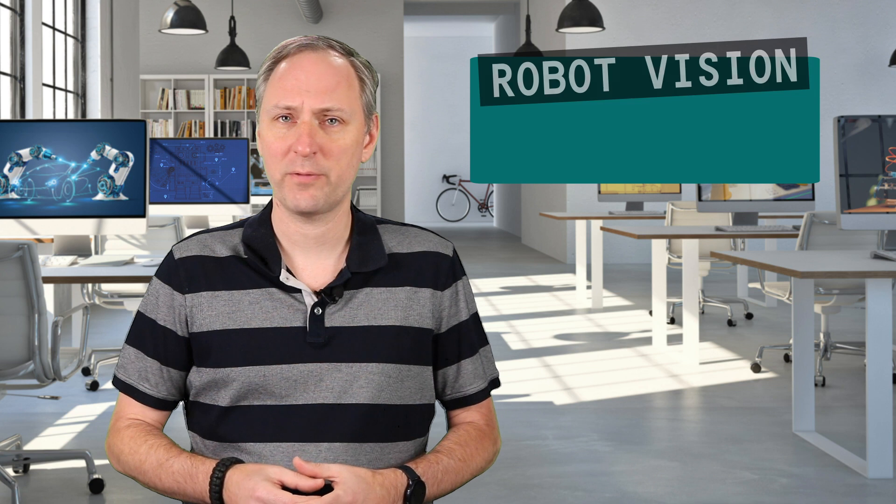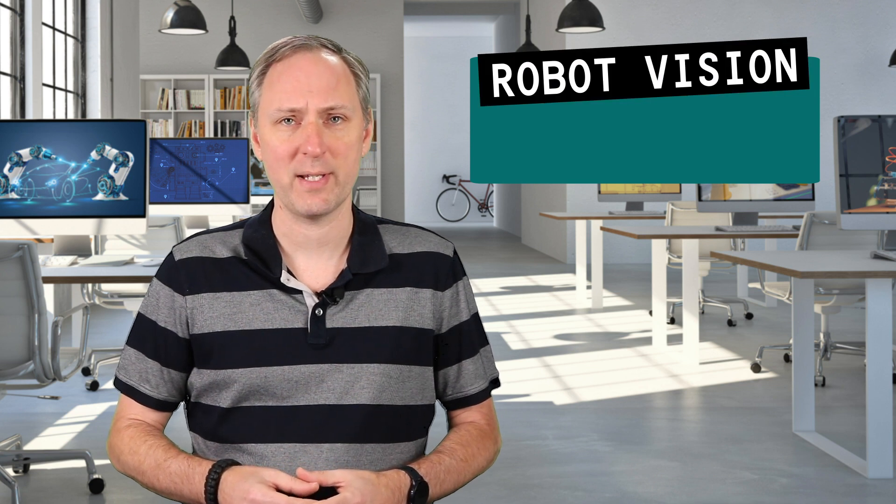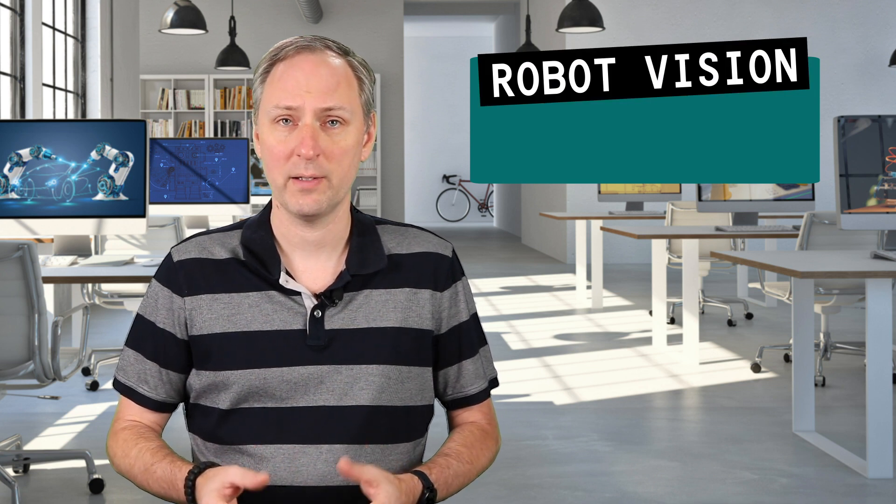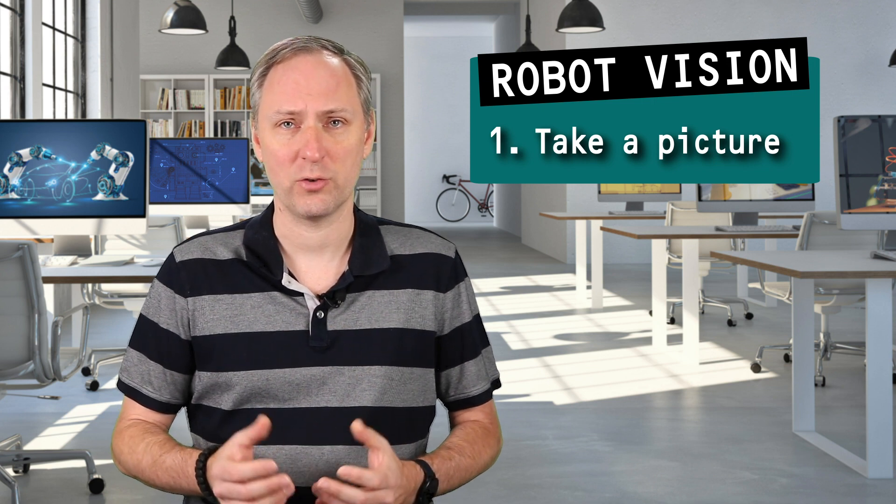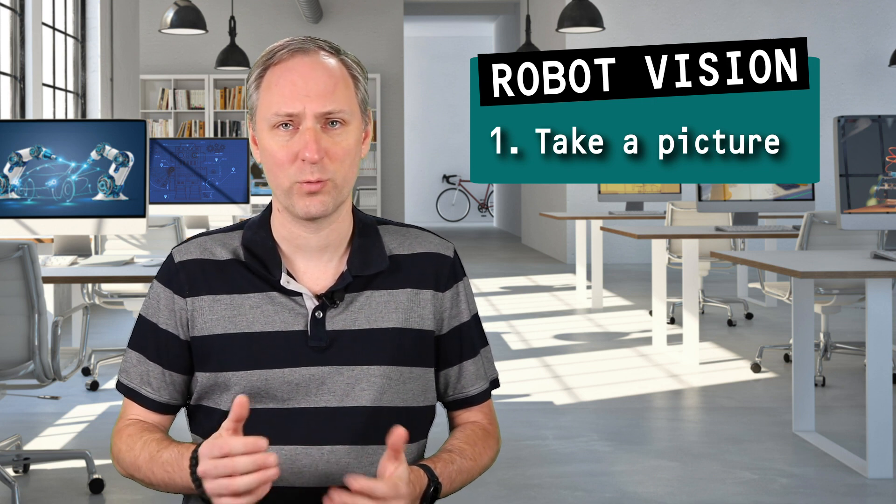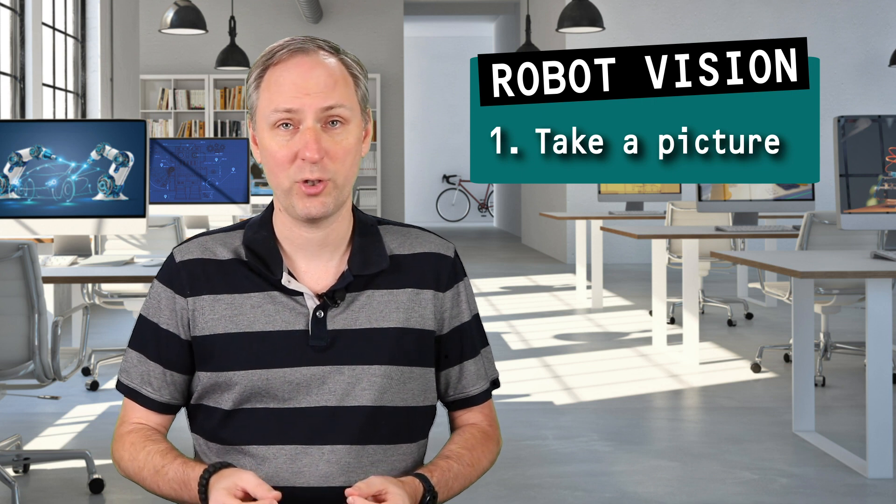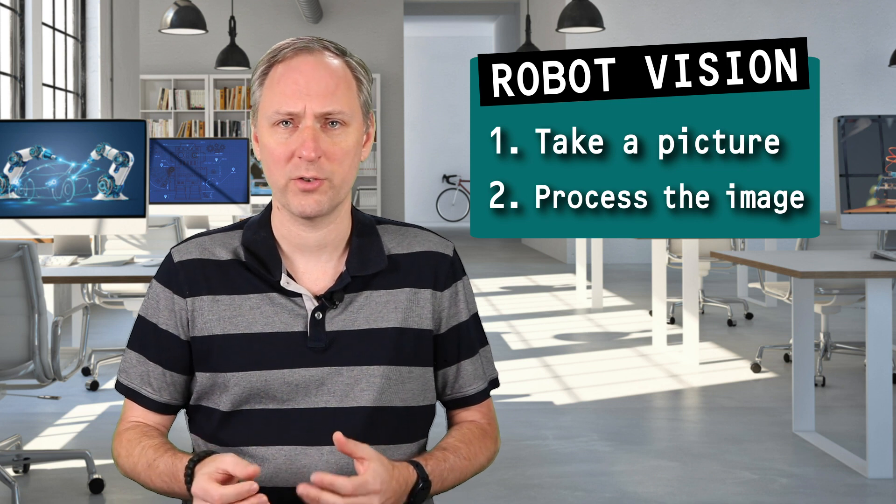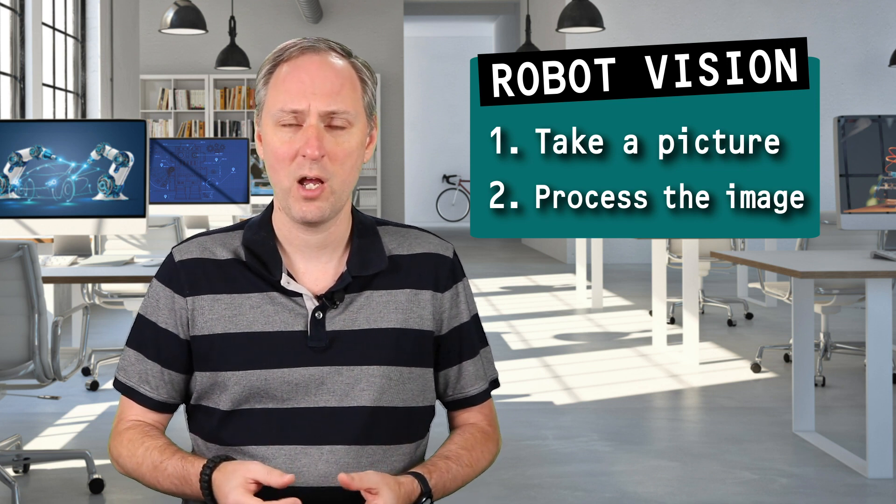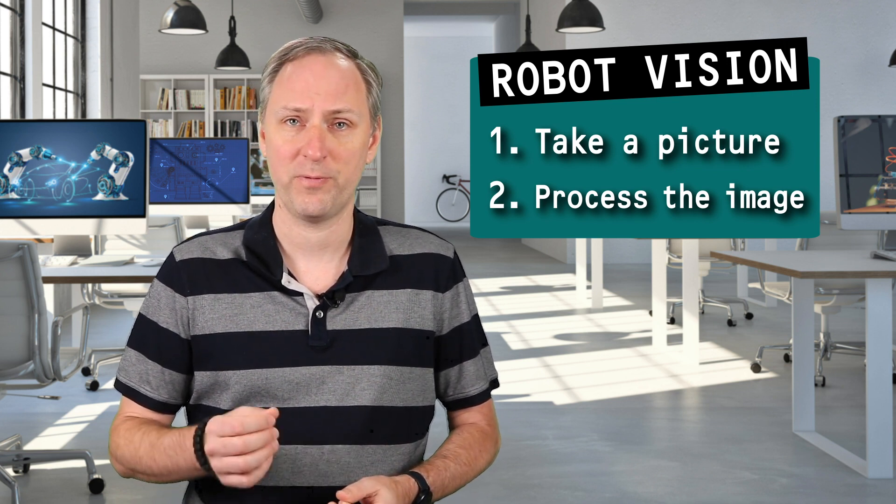To explore this aspect of robot vision, we will follow three steps. Step one, take a picture. This step produces an image, a two-dimensional representation of the real world. Step two, process the image. Find interesting points, such as corners and edges of objects in the image. We'll call these interesting points features.